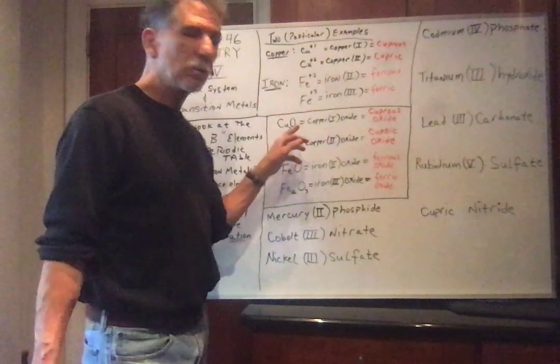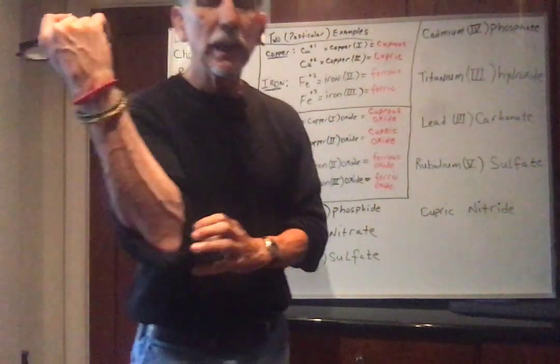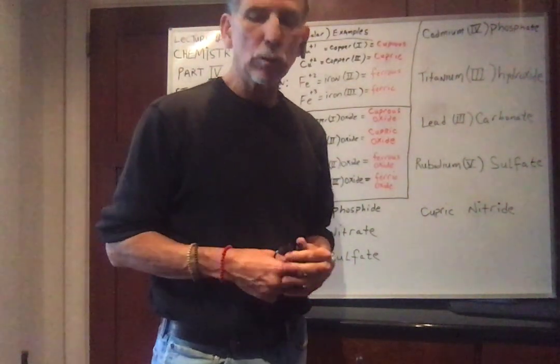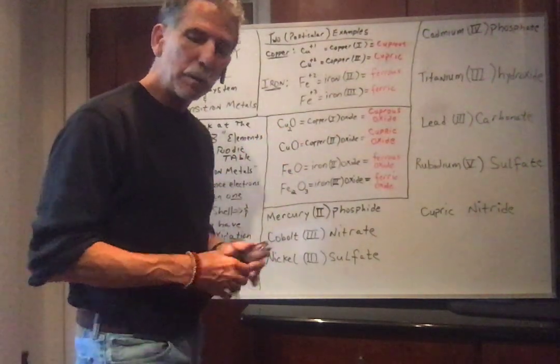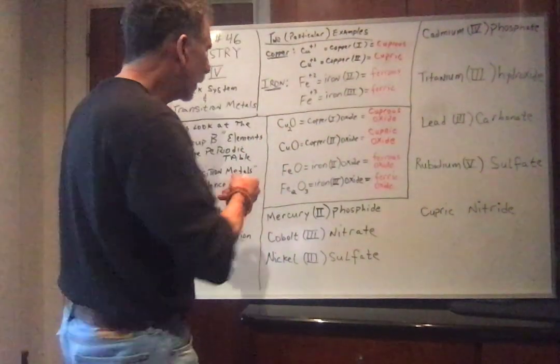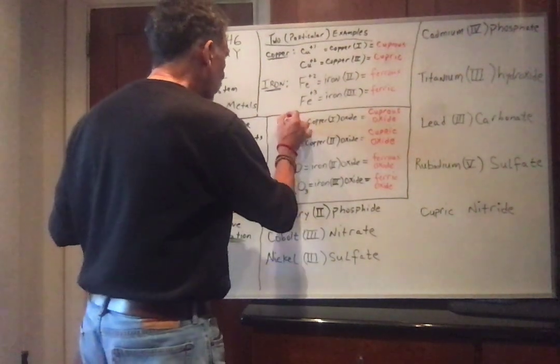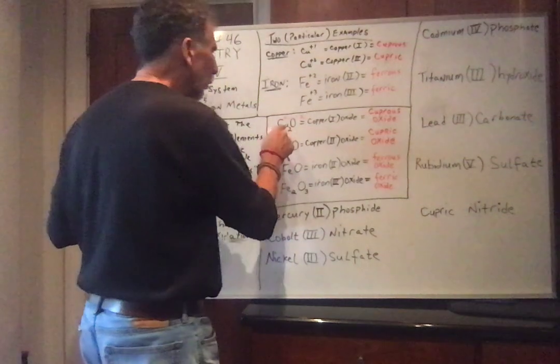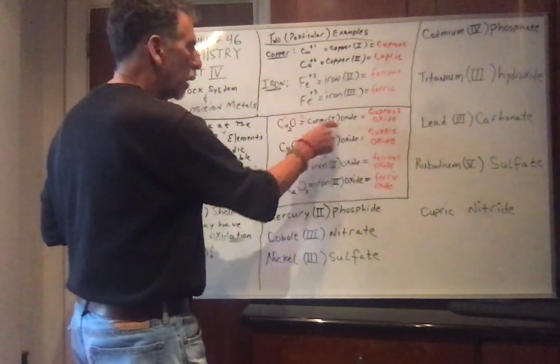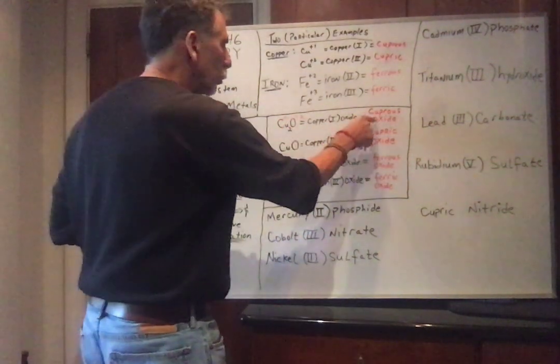For example, oxygen - remember, oxygen is in group 6A, so it needs two electrons. Cu2O is telling me that copper has a plus 1 charge there, and this is minus 2. So if copper is plus 1, this is copper 1 oxide or cuprous oxide.